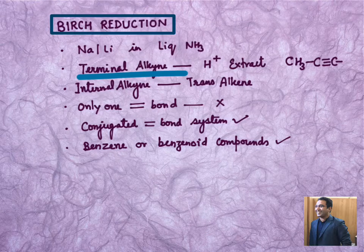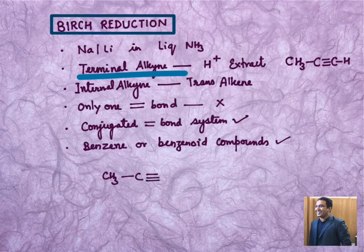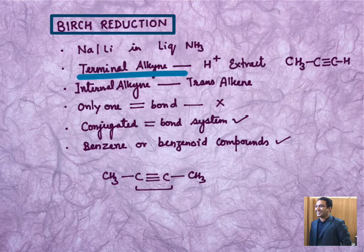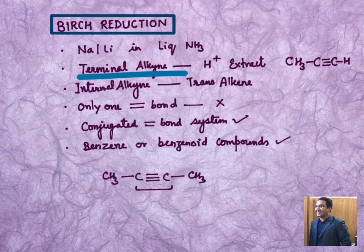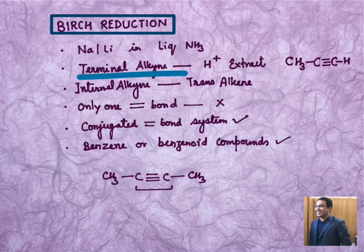Now when it is an internal alkyne, what is the meaning of internal alkyne? Let us say we are given something like CH3-C≡C-CH3. Now this triple bond is in the middle. It is not on terminal position, there is no hydrogen which we can draw on terminal position. So this internal alkyne can give us trans alkene and there is a proper mechanism for it.